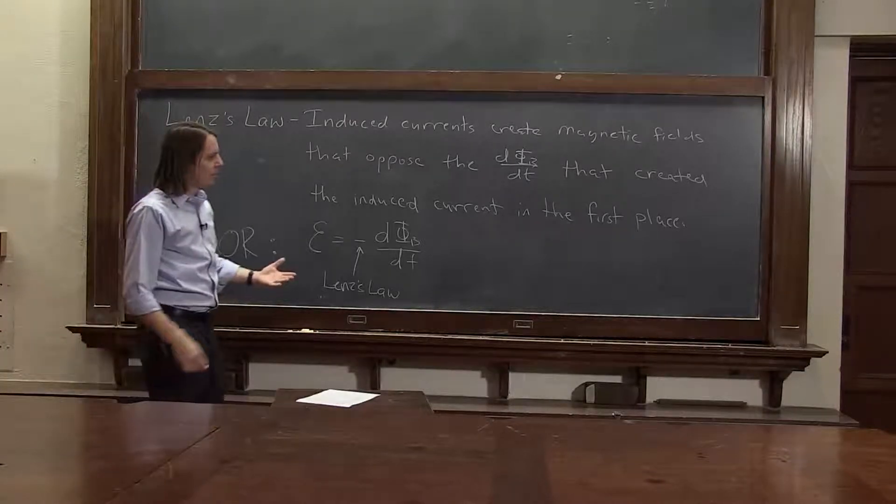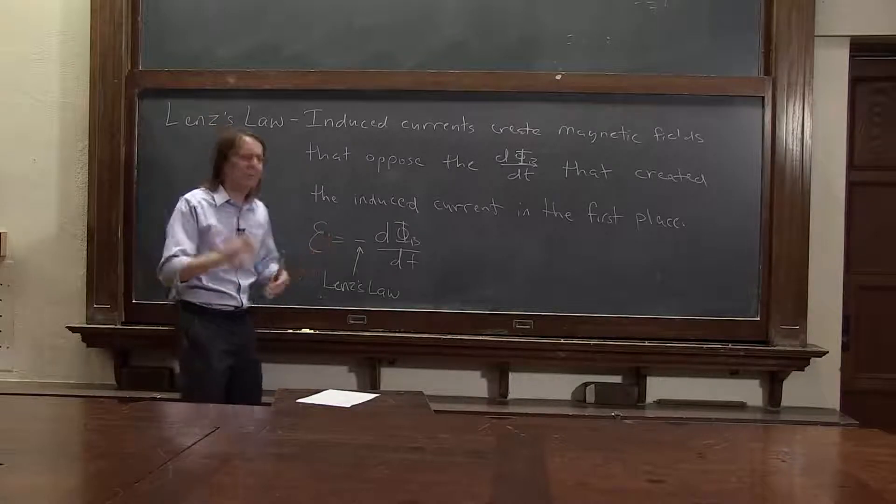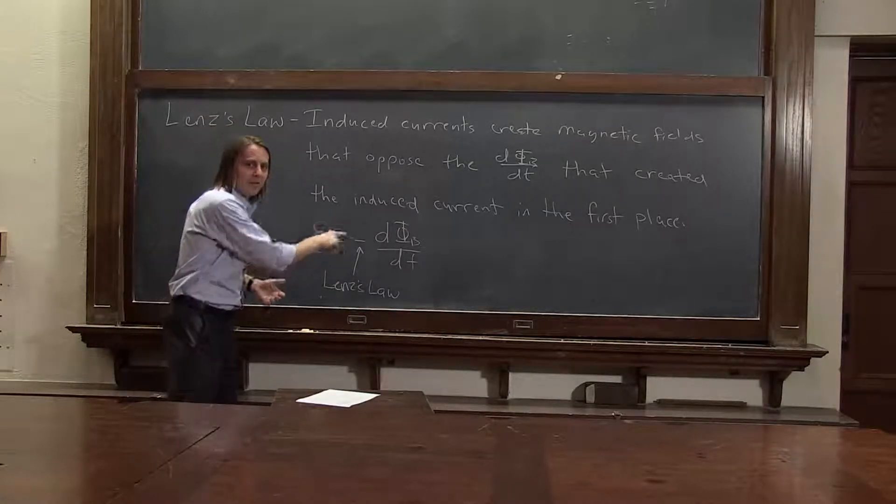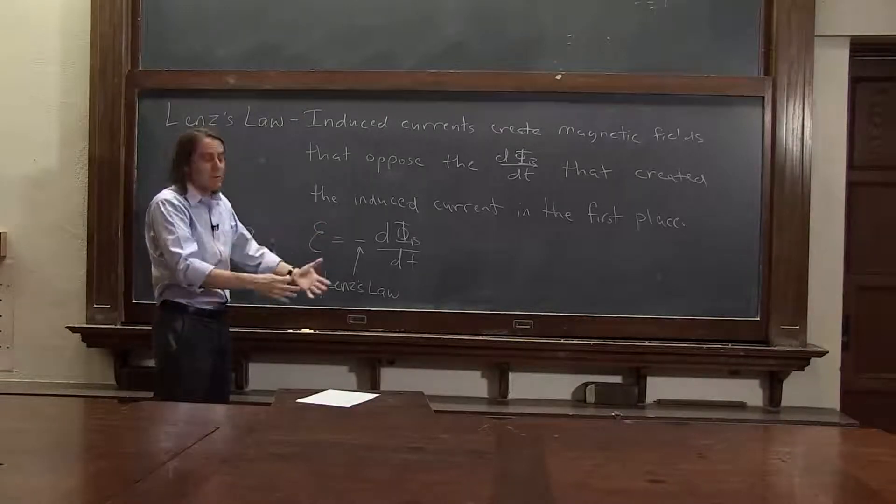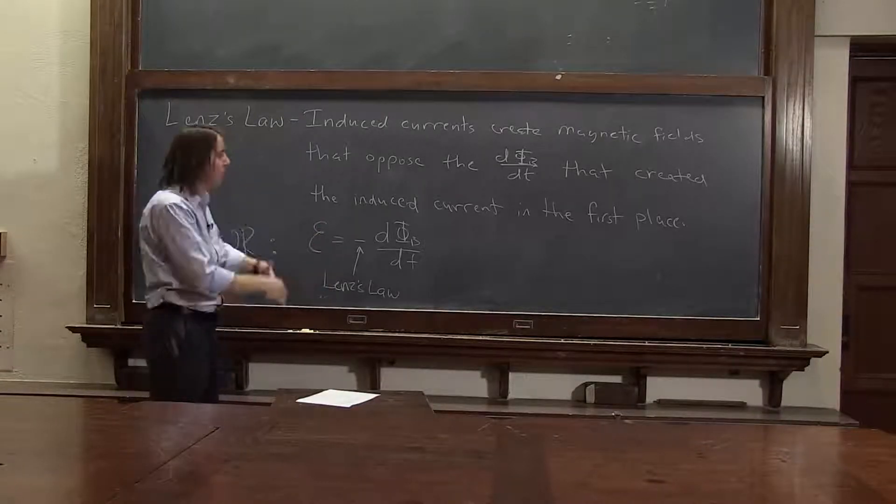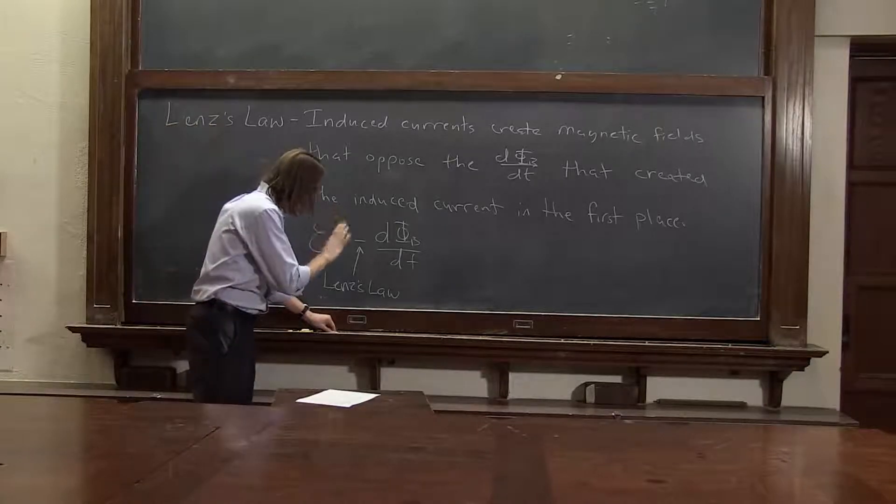I imagine that Lenz ran around in the 19th century and kept telling people, you know there's a negative sign there, and reminding them, don't forget. There's a negative sign there. And my theory is that they just kind of got sick of him and said, well, we'll name it after you if you'll stop reminding us. So that's not really, I don't think that's what happened. But that's how I imagine it.